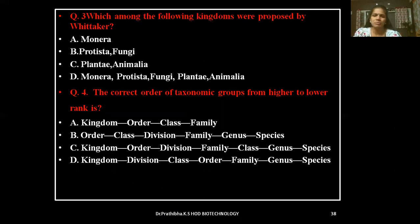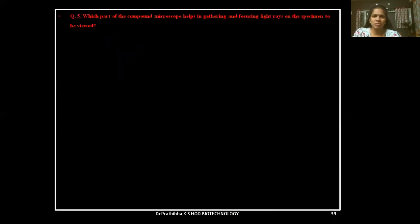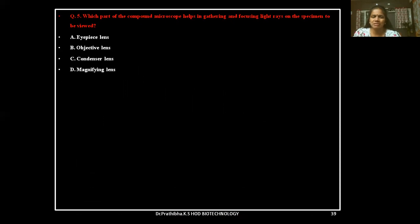Later you will be able to go through. Question 5: Which part of the compound microscope helps in gathering and focusing light rays on the specimen to be viewed? Options: Eyepiece lens, Objective lens, Condenser lens, or Magnifying lens. Keep your answer ready.